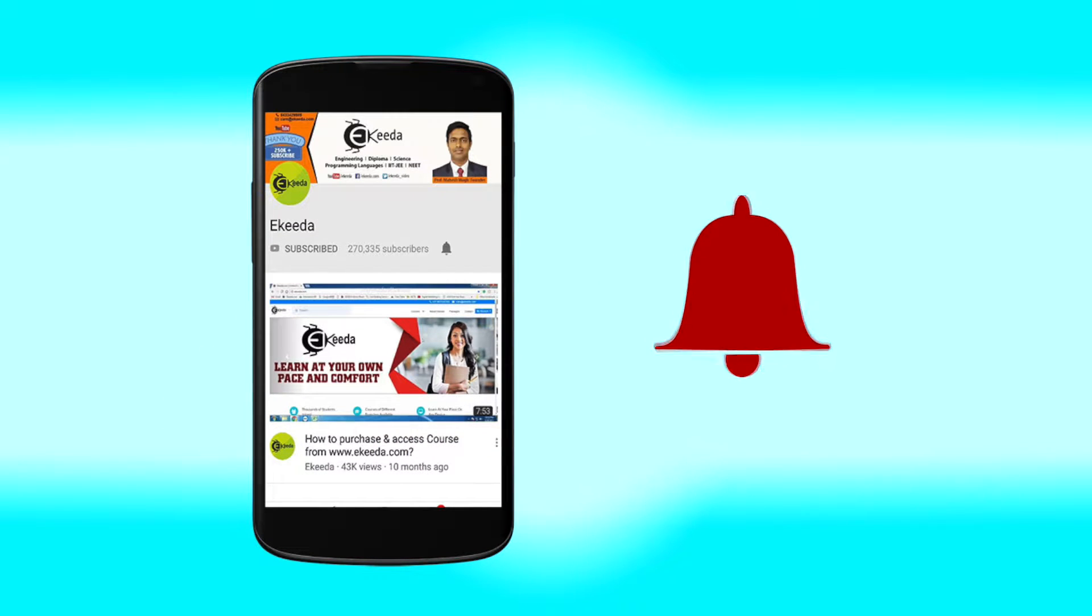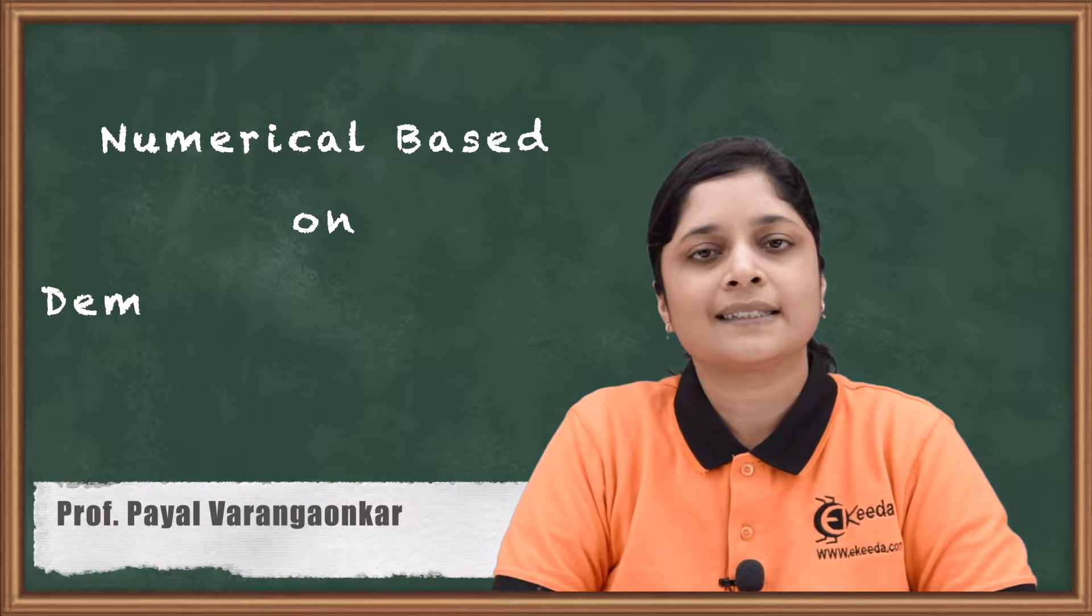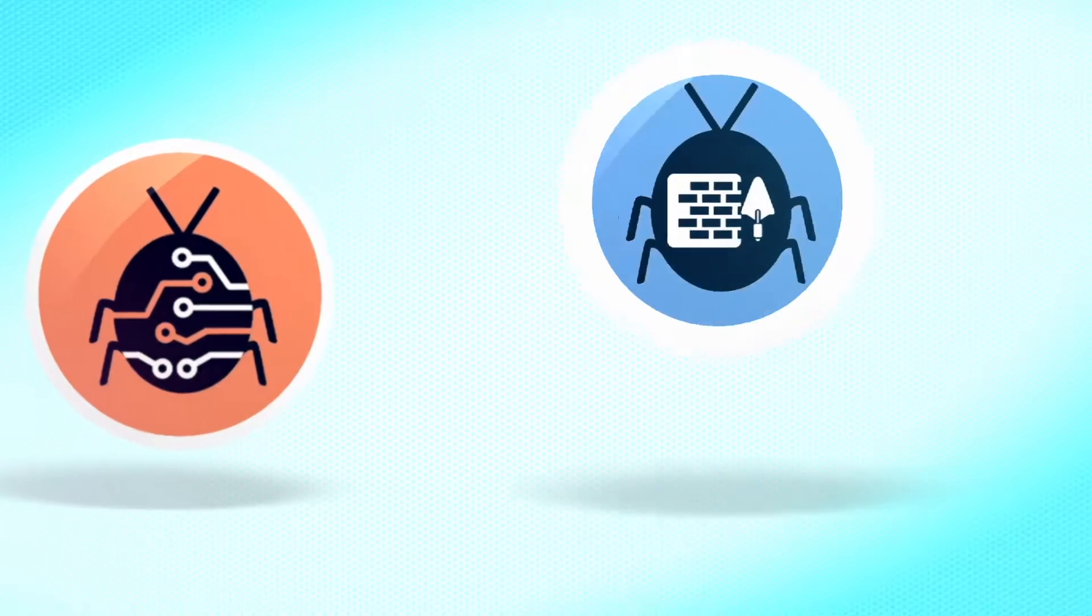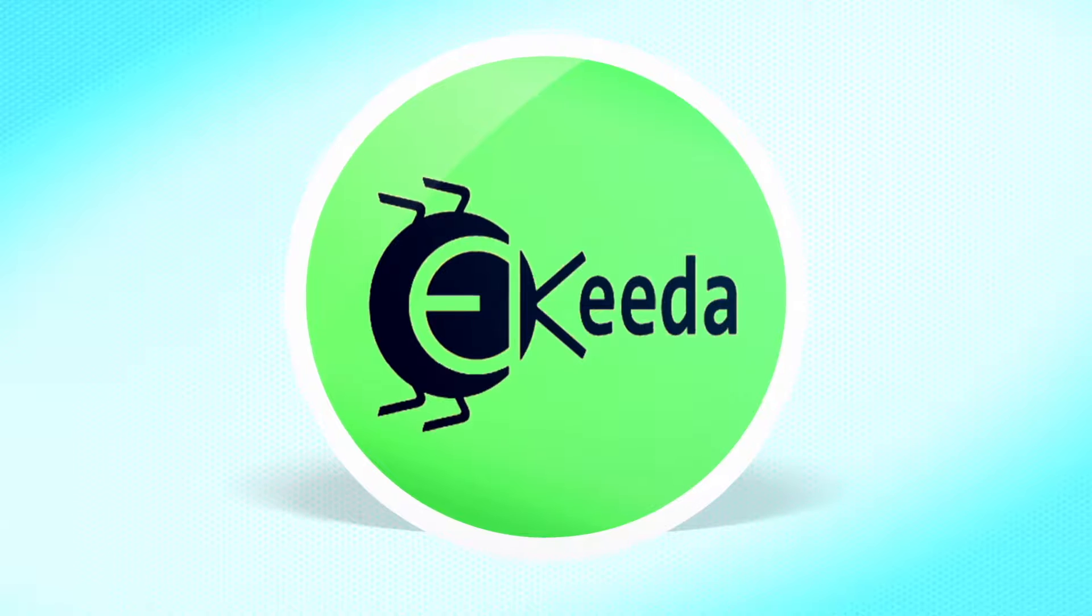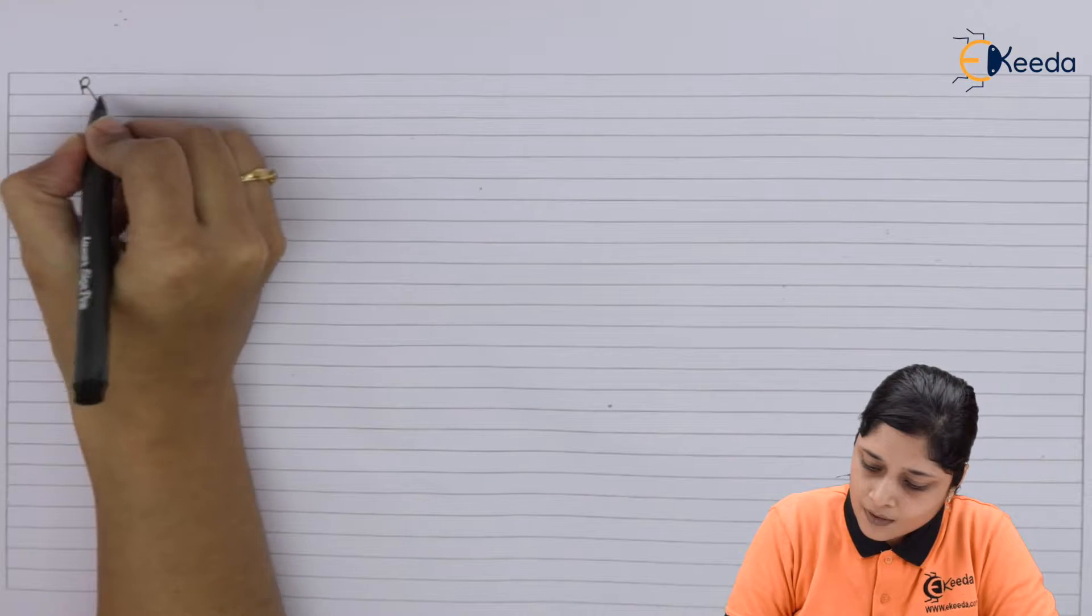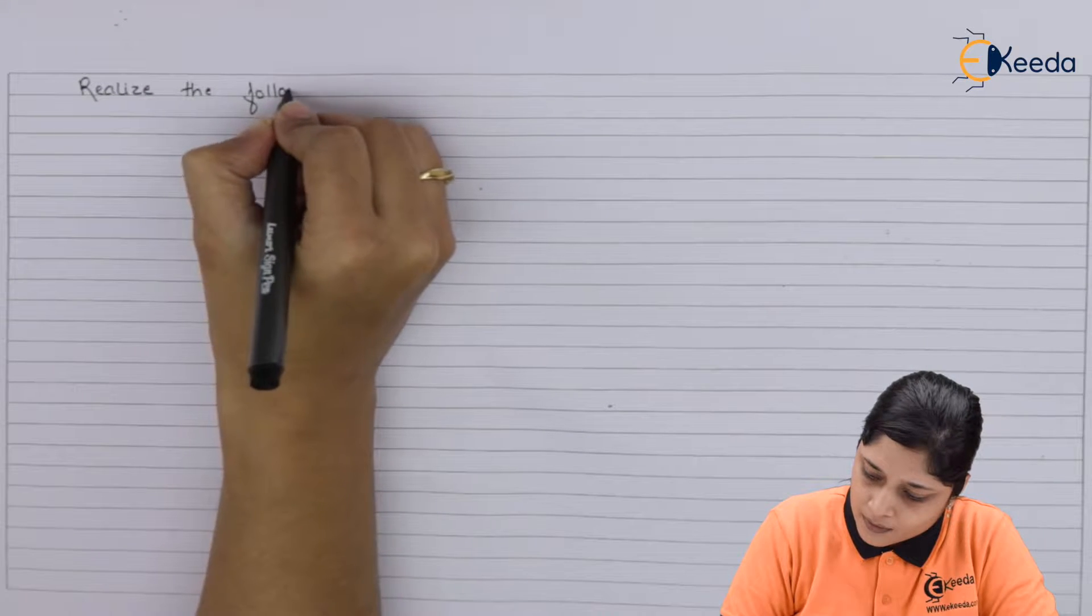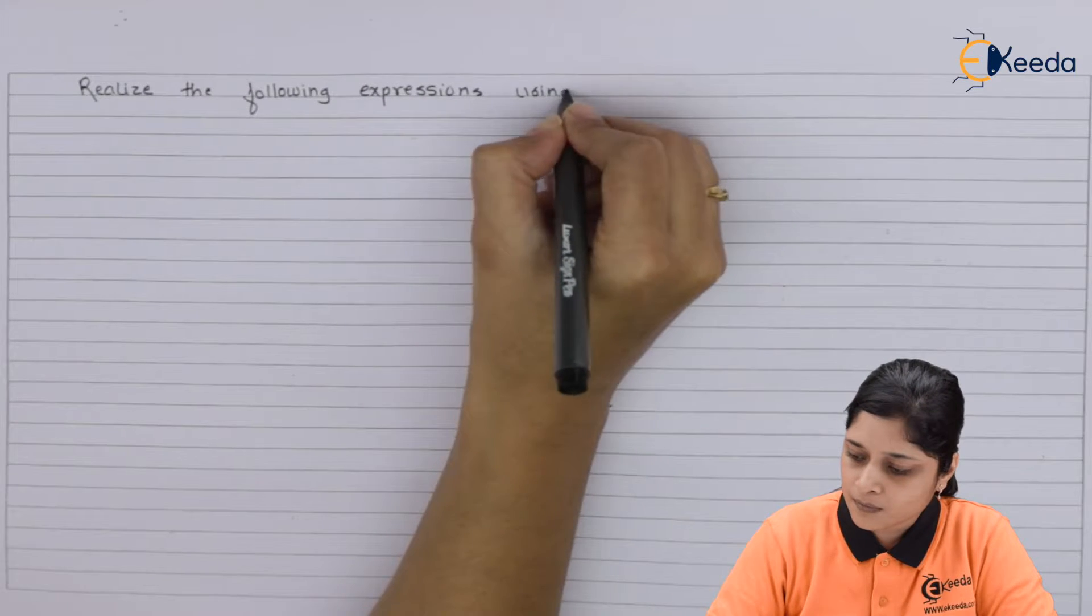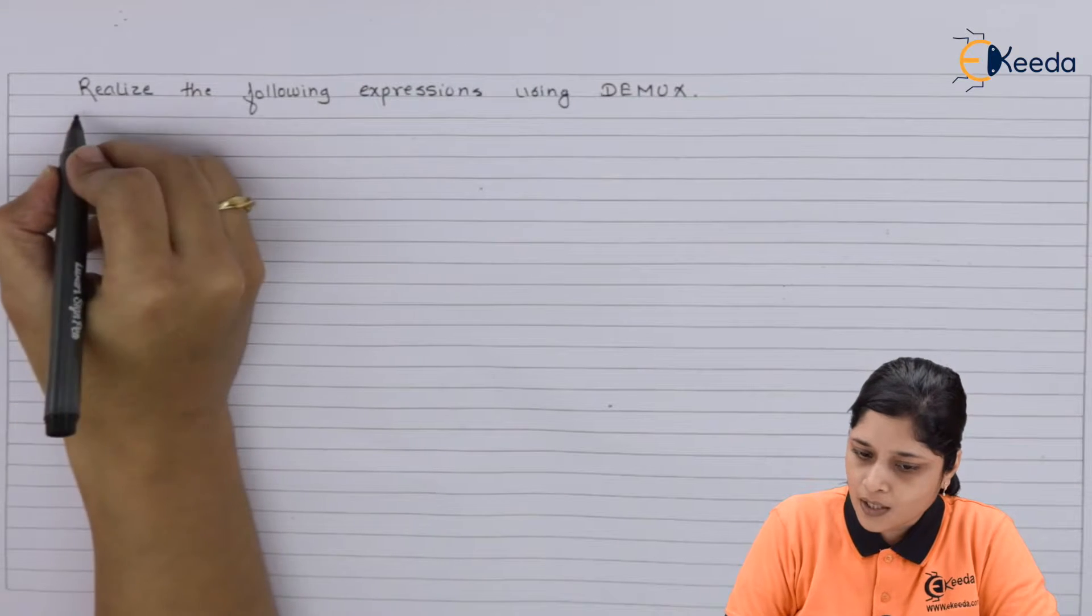Click the bell icon to get latest videos from Ikeda. Hello friends, let's start the numerical based on demultiplexers. Your numerical is: realize the following expressions using DMUX.